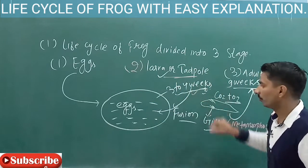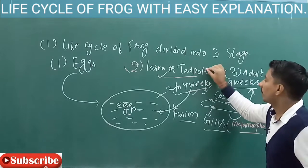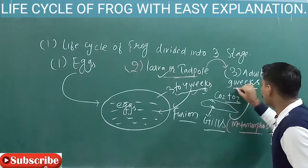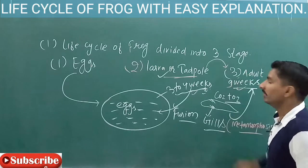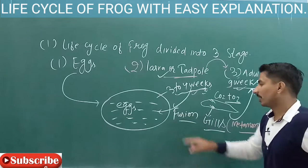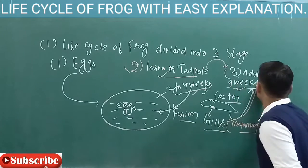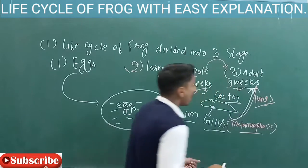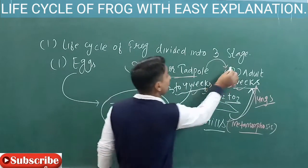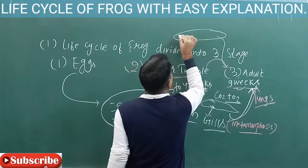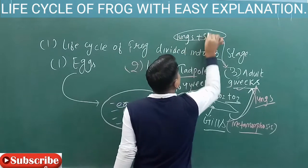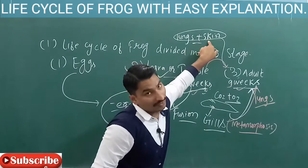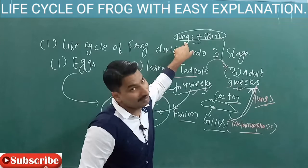Metamorphosis definition: after three to four weeks, when larva or tadpole converts to adult, it takes nine weeks. When it goes to the adult stage, the gills convert into lungs. In the adult stage, the frog has both lungs and skin. The frog uses skin also for exchange of gases, and lungs also for exchange of gases.